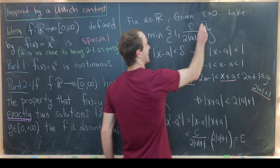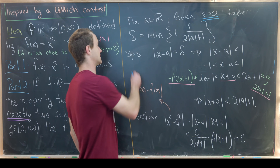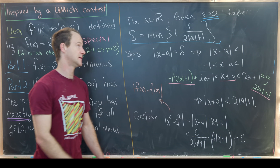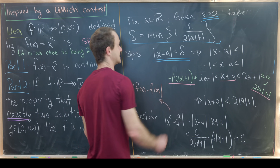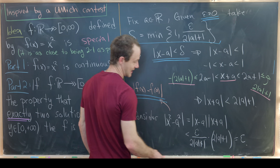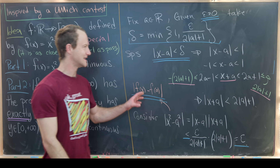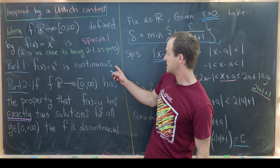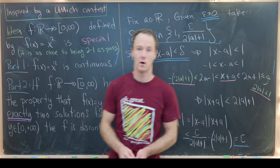So we were given an arbitrary ε, we used it to construct a δ, and showed that |x − a| < δ implies |f(x) − f(a)| < ε. That's exactly the epsilon-delta condition for continuity, so part one is complete.